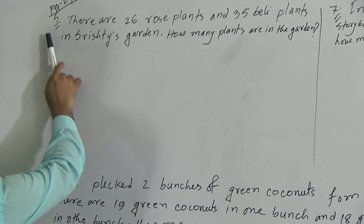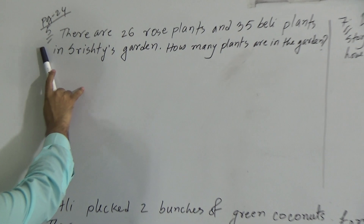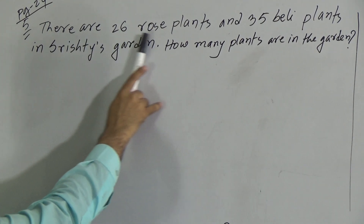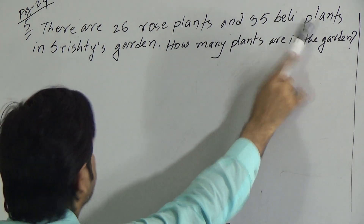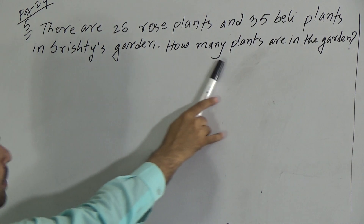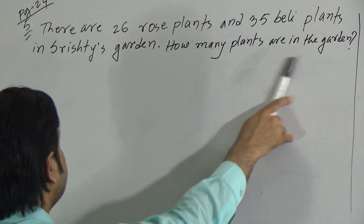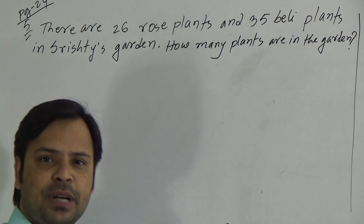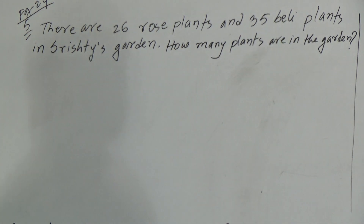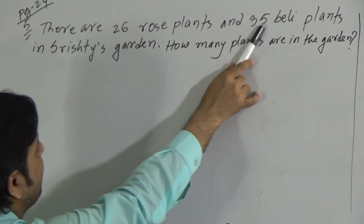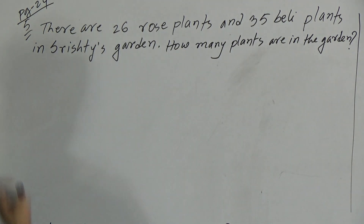Now see question 5 — this is our problem. There are 26 rose plants and 35 belly plants in Srishti's garden. How many plants are in the garden? It means that we have to determine the total number of plants in the garden. As we need to determine the total, we have to add the number of rose plants and number of belly plants.